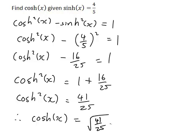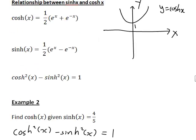So cosh(x) is square root of 41 on 25, or simplifies to the square root of 41 divided by 5. Those are a couple of examples of using the relationship cosh squared x minus sinh squared x equals 1 to find the value of cosh(x) or sinh(x) when we know the other one. The main thing to be careful of is that if you're finding sinh(x) it can be positive or negative, whereas cosh(x) is always positive.